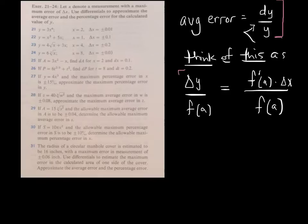Average error, dy is really just delta y, and y is really just f of a. And delta y is really just f prime of a times delta x. So ultimately, I want our actual working formula for average error to be this one right here.